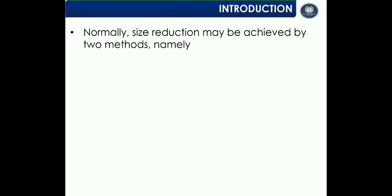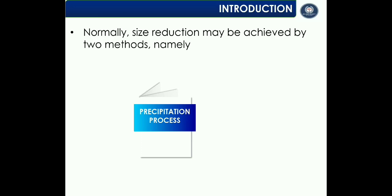Normally, size reduction may be achieved by two methods: the precipitation process and the mechanical process. In the precipitation method, the substance is dissolved in an appropriate solvent, and subsequently it is finely precipitated by the addition of another solvent which is miscible with the first but in which the substance is insoluble. This method is suitable for the production of raw materials and bulk drugs. Inorganic chemicals such as calcium carbonate, magnesium carbonate, and yellow mercuric oxide are prepared by the precipitation method.